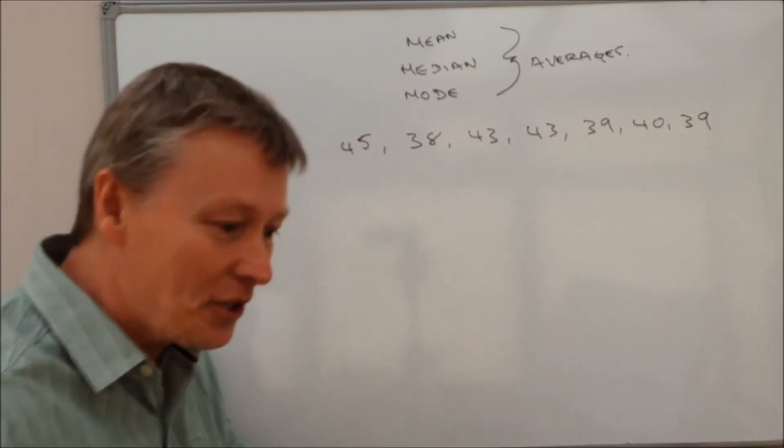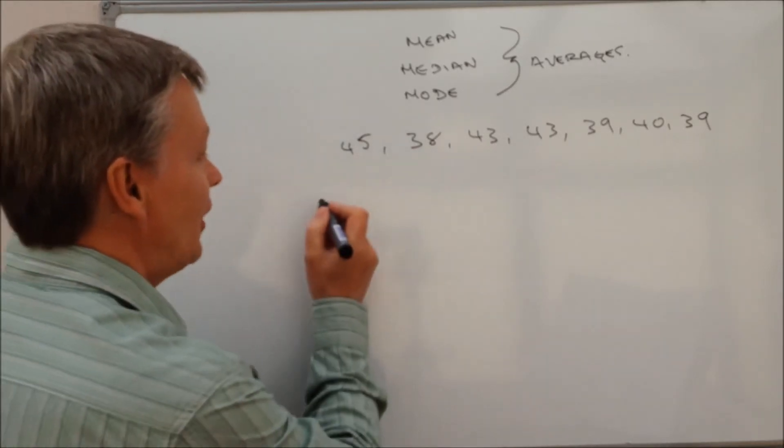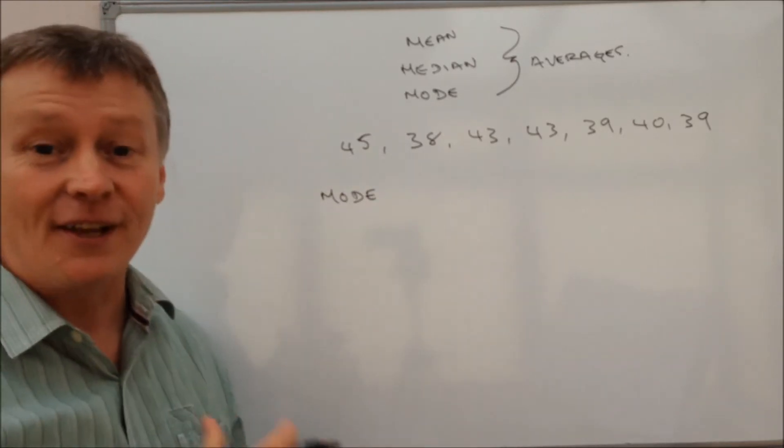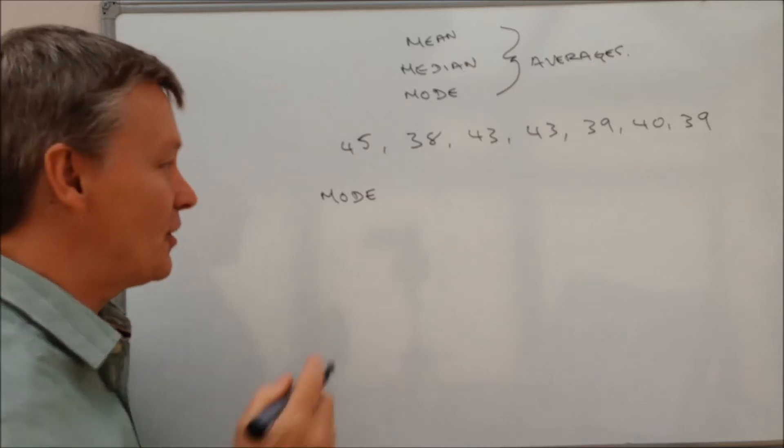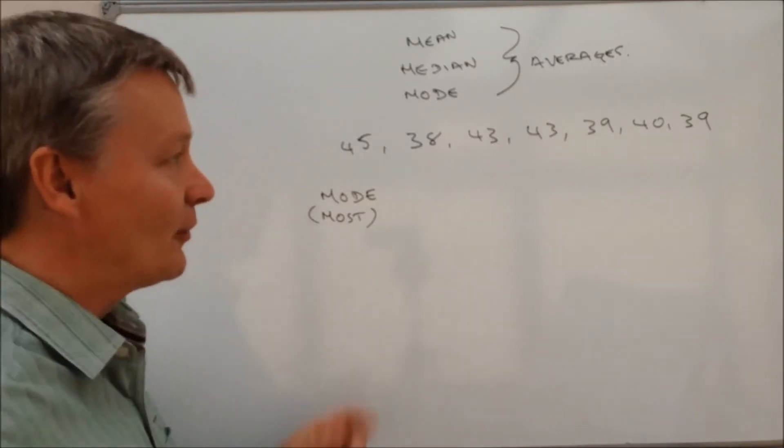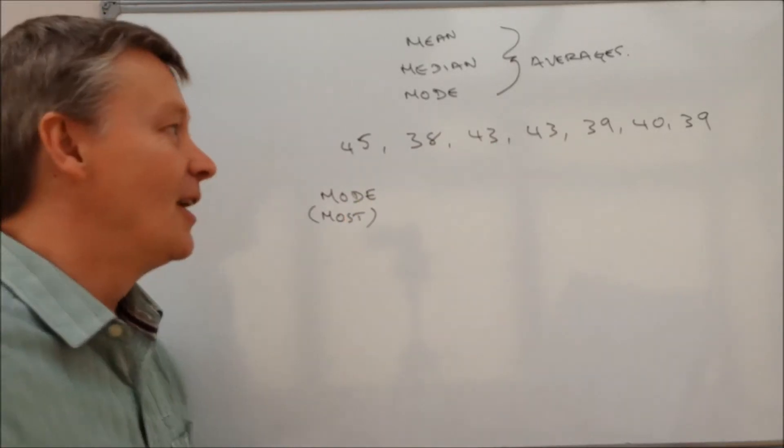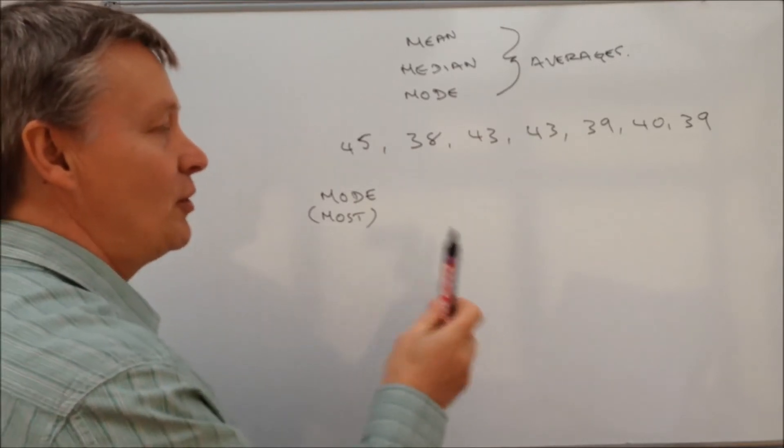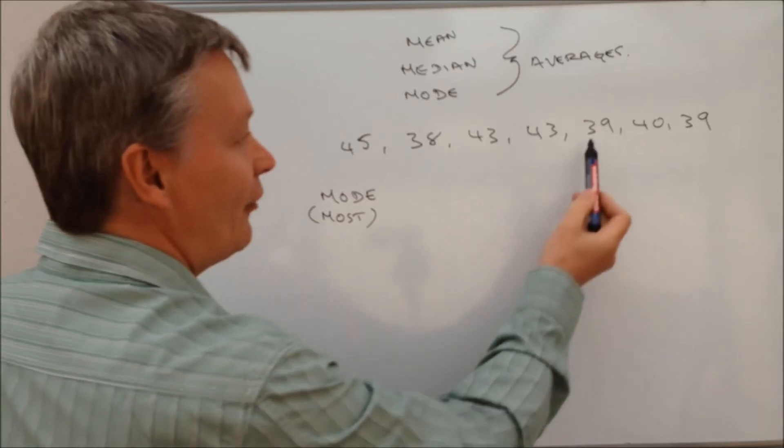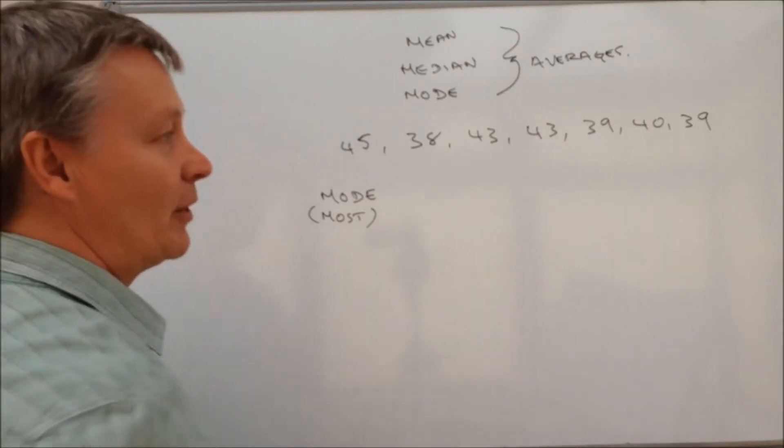And the question is, the first thing is that you need to write down the mode. So the mode, and the thing you need to remember with mode is it sounds a little bit like most. It's the way I remember it, is the most. So in other words, which number appears more frequently? Well, if you have a look at this, you've actually got two modes on this particular set of numbers. The first one is 39, which you've got two of them, and the second one is 43.